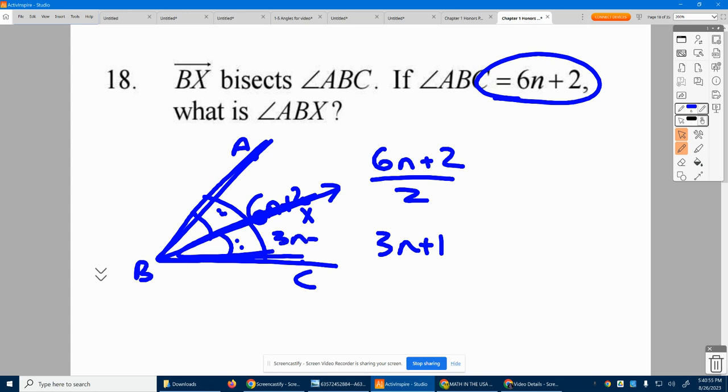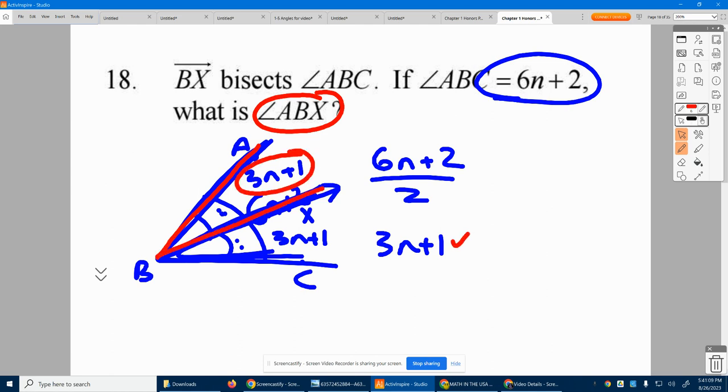So each one of these is 3n plus 1. This angle here is 3n plus 1. Now notice, the question asks for angle ABX. Here's A, here's B, here's X. What is that opening? 3n plus 1.